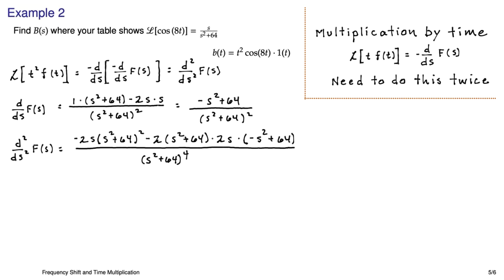We can see in here that we have a lot of s²+64 factors floating around, so we can definitely do some type of simplification. If I take this first term and divide out the (s²+64)² in the numerator and denominator, I just get the -2s over (s²+64)² quantity. And now I have to go over and attack this second term.